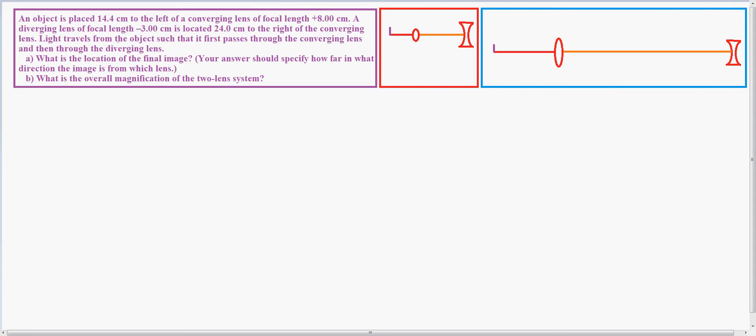Light travels from the object such that it first passes through the converging lens and then through the diverging lens. Part A: what is the location of the final image? And Part B: what is the overall magnification of the two-lens system?